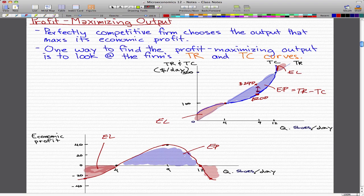Now at high output levels, the firm again incurs economic loss. The firm will face a steeply rising cost because of diminishing returns. So really, the firm maximizes its economic profit when it produces nine pairs of shoes a day.